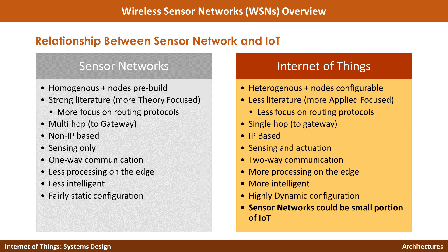From a research point of view, sensor networks have a strong literature with a lot of theoretical focus — on routing protocols and on energy. Internet of Things literature lacks this fundamental theoretical approach, with less focus on routing because most of the time you communicate directly with the gateway in a one-to-one fashion. There is a lot of applied focus on IoT compared to sensor networks. Sensor network research and development involves a lot of simulation, while IoT is more applied with less simulation.